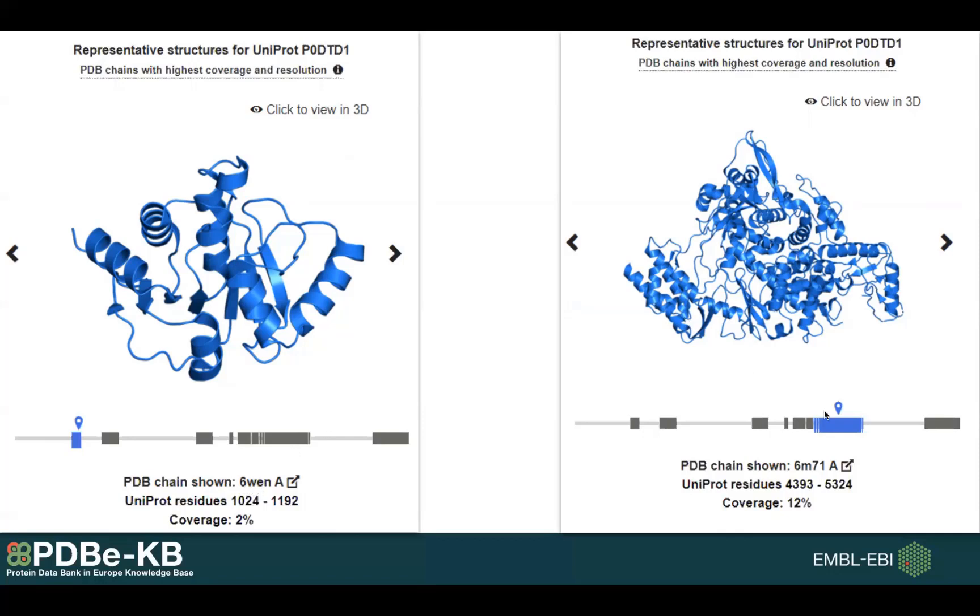But if you are interested in a different part of that protein, you can use this panel to navigate between the different sections. You can see that for that region the representative PDB would be 6WEN.